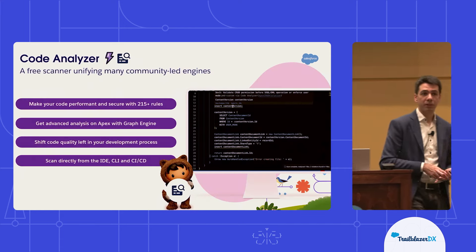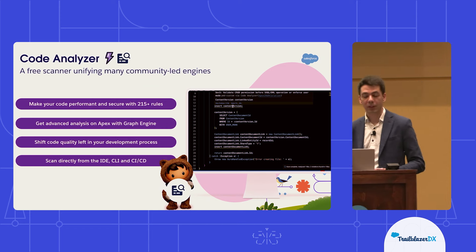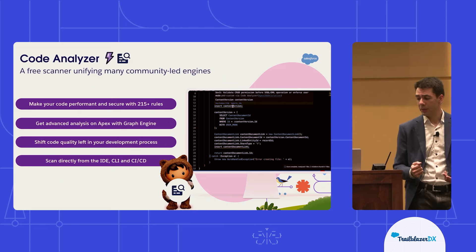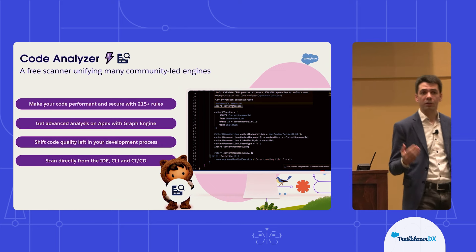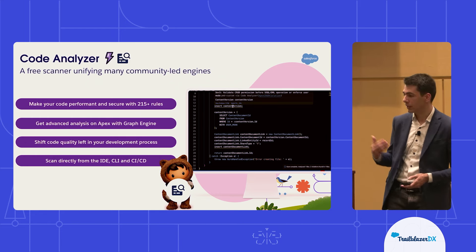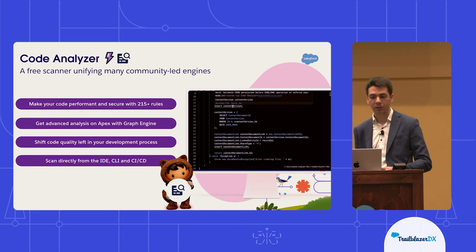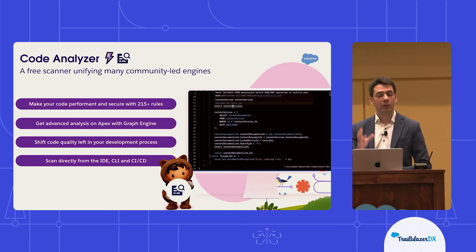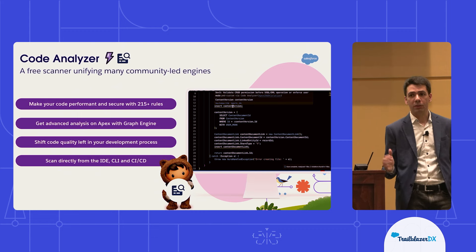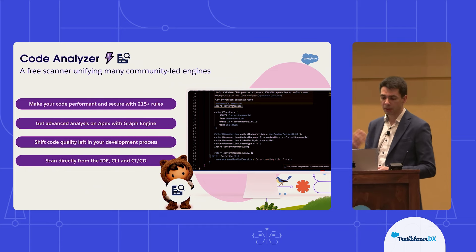We saw Code Analyzer — our free scanner that unifies many open source engines into a unified experience that is super easy to integrate as part of your development process. It comes with over 200 rules to allow you to detect problems across a whole range of categories. As part of our engines, Salesforce has created our own Graph Engine, which allows you to detect even more advanced problems in code. Most of the engines within Code Analyzer follow a pattern of static code analysis — effectively trying to look at the particular file and identify issues, certain patterns or anti-patterns. With Graph Engine, we actually simulate the entire code base and various code paths that code can run through, and that allows us to detect much more advanced vulnerabilities in terms of security and performance issues that span multiple files and multiple instances of code.